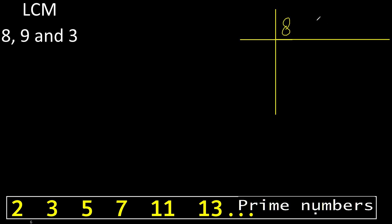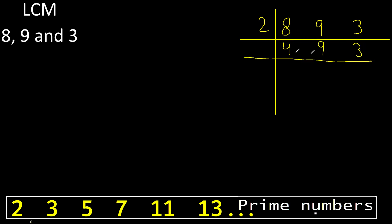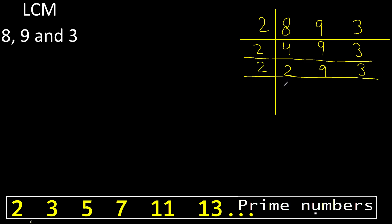Can 8, 9, or 3 be divided by 2? Yes. 8 divided by 2 is 4. 9 cannot be divided by 2, so it stays equal. 4 can be divided by 2 — 4 divided by 2 is 2. 2 can be divided by 2 — 2 divided by 2 is 1.